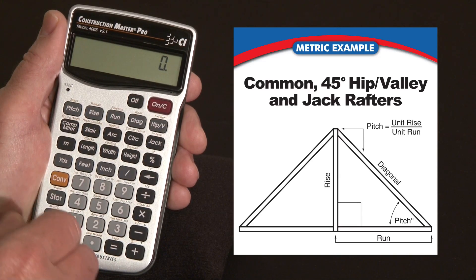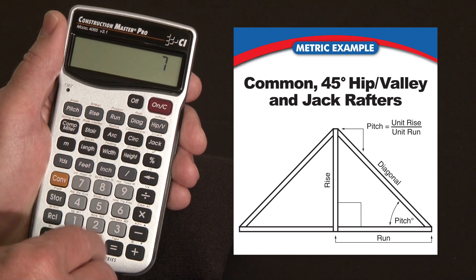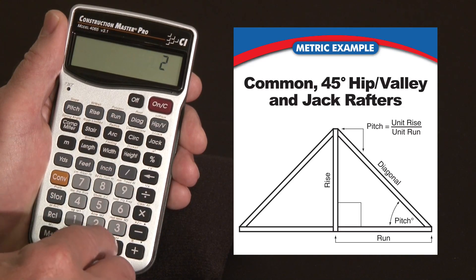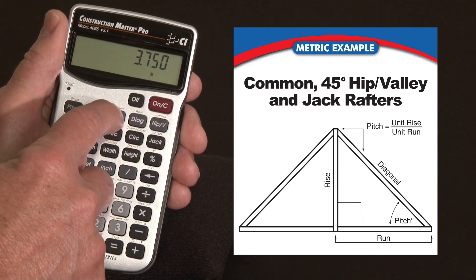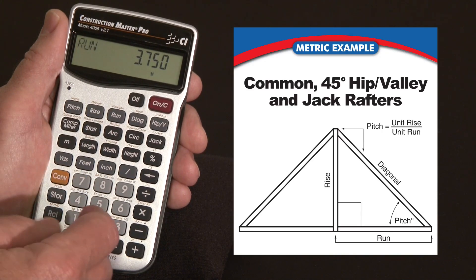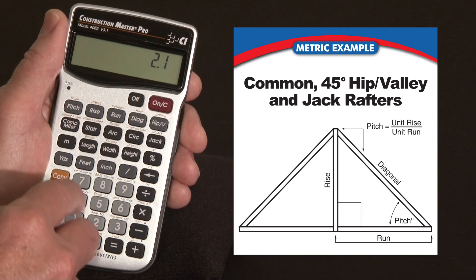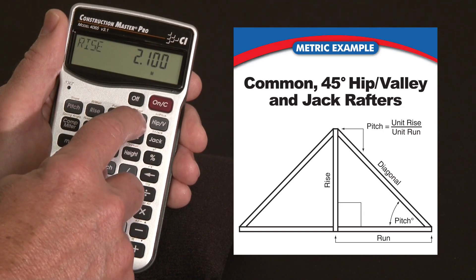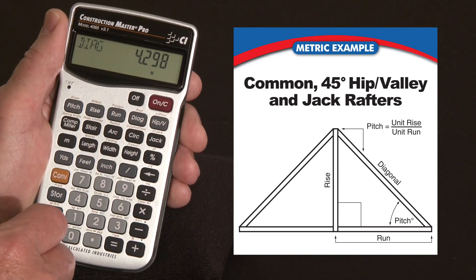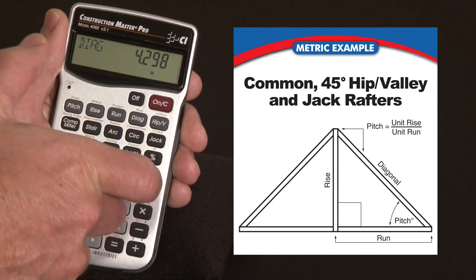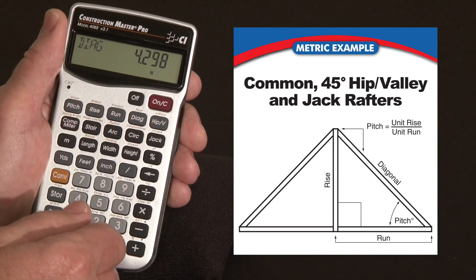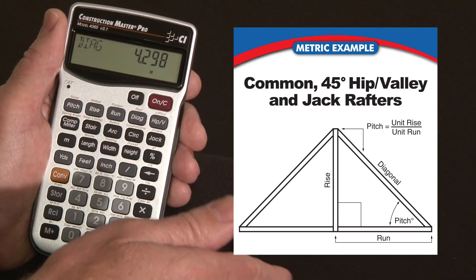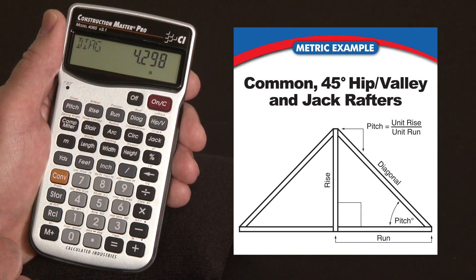So if you've got a building that's 7.5 meters wide, we're going to divide that by 2 — 3.75 meters — and we enter that as our run. Now if the plans say it should have a rise of maybe 2.1 meters, we'll enter that as a rise. Then we just press the diagonal key and it gives us the hypotenuse — the geometrically correct hypotenuse from the center of the ridge to the outside edge of the plate. Of course you're going to have to adjust for half the thickness of the ridge and add any overhang as your design dictates.